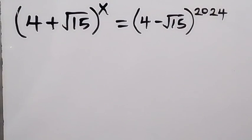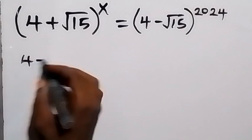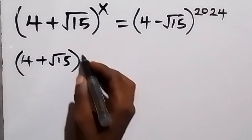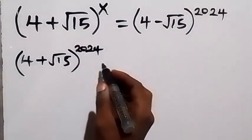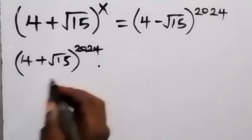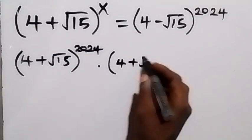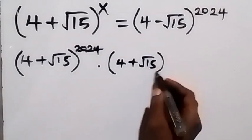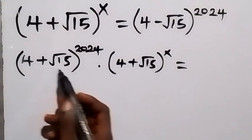Like and also subscribe to my channel, thank you. From here, let's multiply both sides by 4 plus root 15, all raised to power 2024. So we multiply both sides by this — on this side it becomes times 4 plus root 15 raised to power x, and also multiply this side by 4 plus root 15 raised to power 2024.